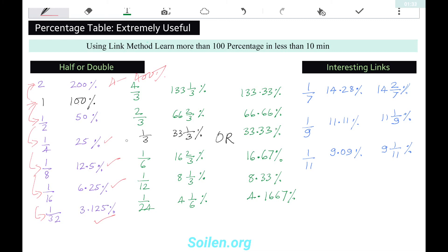Now, 1/3 is 33 and 1/3 percent, or we can write 33.33%. Twice of this is 2/3, which is 66 and 2/3 percent. Twice of this is 4/3, which is 1 and 33/3 percent.